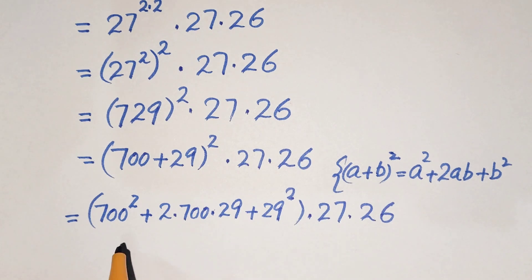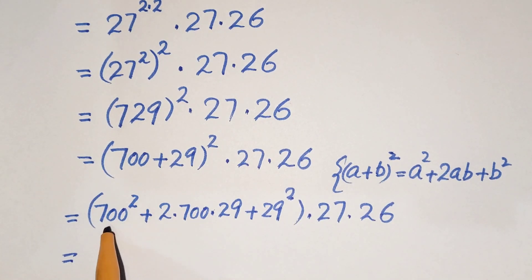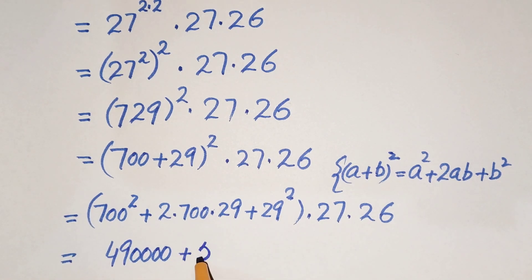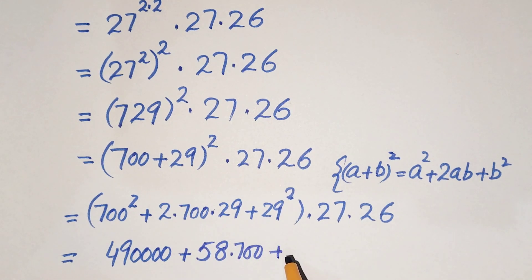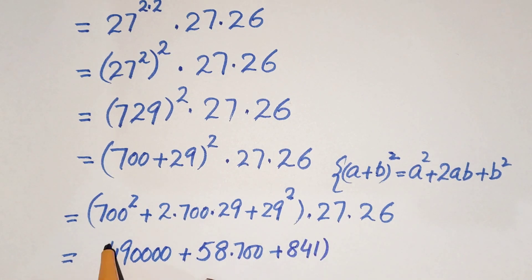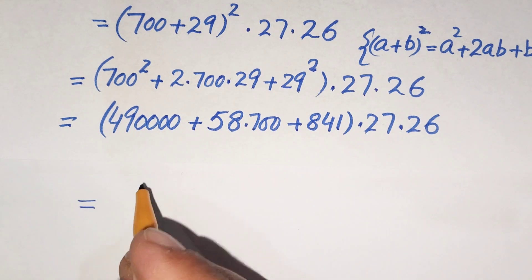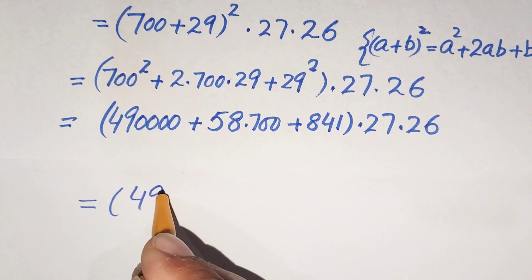Now expanding this formula: 700 squared is 490,000. Then 2 times 700 times 29 gives 58 times 700, which is 40,600. And 29 squared equals 841. So we have 490,000 plus 40,600 plus 841, times 27 times 26.